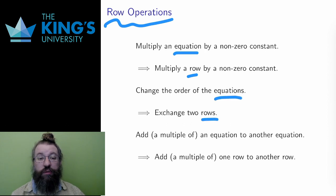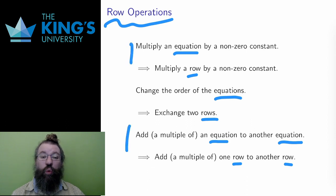Instead of changing the order of the equations, I change the order of the rows. And instead of adding one equation to another equation, I add one row to another. Often I combine the first and third of these into one operation, adding a multiple of a row from another.